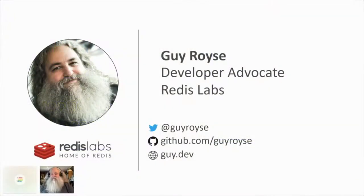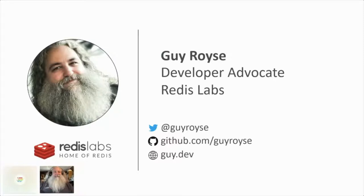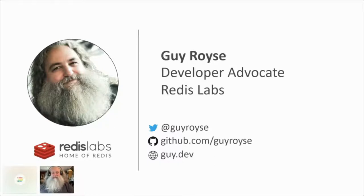My name is Guy Royce. I'm a developer advocate at Redis Labs. We've got a small window here for the talk, so I'm going to go a little fast. The only important thing on the slide is my Twitter account, because if you want to follow what I'm talking about, or make fun of me while I'm giving the talk, that is the place to do it. Also, github.com/GuyRoyce will have slides - they're already out there, so you can check that out as well.